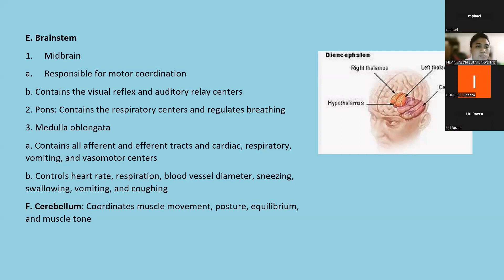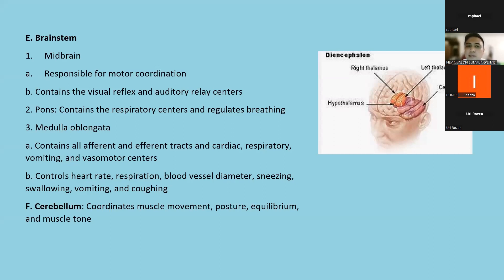The medulla oblongata contains all afferent and efferent tracts and the cardiac, respiratory, vomiting, and vasomotor centers. It also controls heart rate, respiration, blood vessel diameter, sneezing, swallowing, vomiting, and coughing. In brainstem infarcts, we commonly see difficulty in swallowing and there will be more secretions, especially in patients with brainstem stroke.